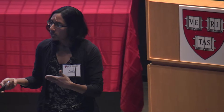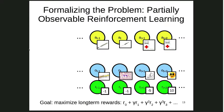Before going into HIV specifically, let me unpack what reinforcement learning does. It gives us a way of formalizing this problem. We imagine our data as a series of actions — medications being given, measurements taken — we get observations, we have some intermediate reward signal telling us how we're doing, and our goal is to maximize the sum of these long-term rewards. We've taken a clinical problem and turned it into math.